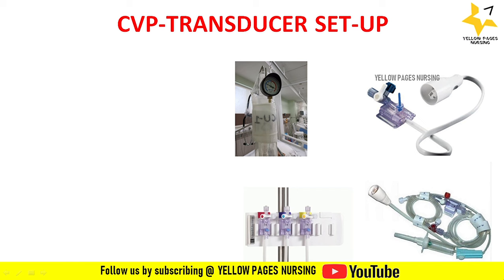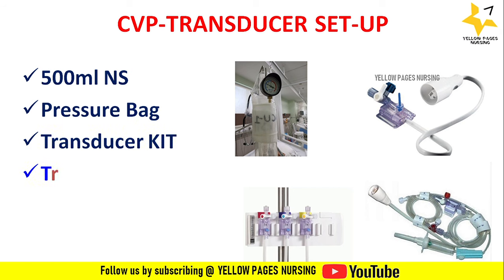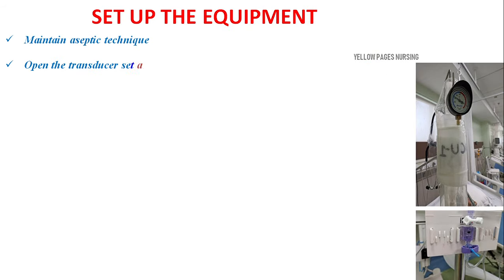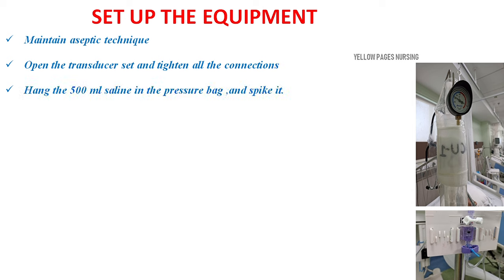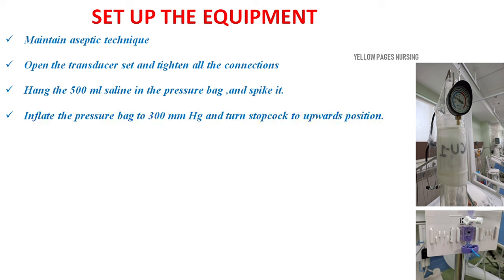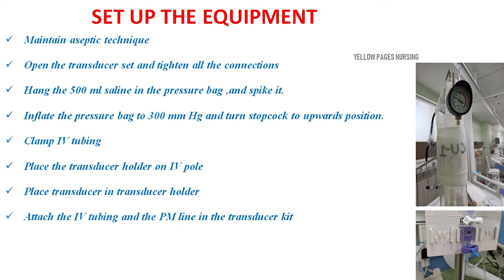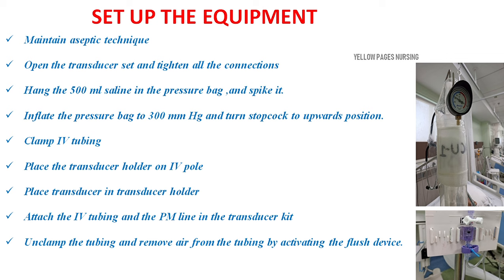For the central venous pressure transducer setup, the articles needed are: 500 ml normal saline, transducer kit, transducer holder, and transducer pressure cable. To set up the equipment: maintain aseptic technique, open the transducer set and tighten all connections, hang the 500 ml saline in the pressure bag and spike it, inflate the pressure bag to 300 mmHg and turn the stopcock to the upwards position, clamp IV tubing, place the transducer holder on the IV pole, place the transducer in the transducer holder, attach the IV tubing and PM line in the transducer kit, unclamp the tubing and remove air by activating the flush device, then point the stopcock at the transducer horizontally and clamp the tubings.